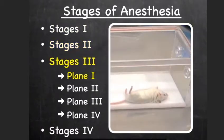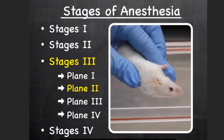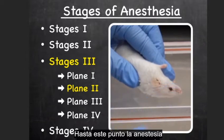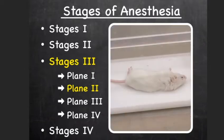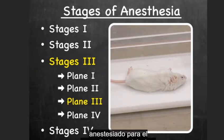In plane one of stage three, the palpebral and swallowing reflexes are absent. During plane two, the laryngeal and corneal reflexes are lost. Up until this point, the anesthetic has not induced amnesia or analgesia. It is in plane three that amnesia and analgesia progress from partial to complete, and the animal is fully anesthetized for a surgical procedure.